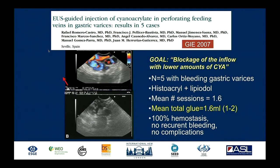Regarding targeting the feeder vessel — the perforator vein — for gastric varices: it was Rafael Romero Castro from Seville who first reported on injecting cyanoacrylate targeting the feeder vessel. The goal is to block the inflow of the feeder of the gastric varices with lesser amounts of cyanoacrylate. It was a small proof-of-concept study, but he had great hemostasis and no recurrent bleeding — representing a change in mindset where we target the feeder vessel rather than indiscriminately treating any varix.